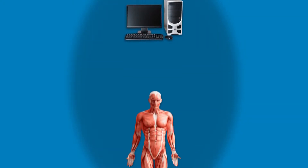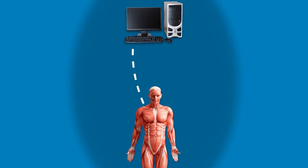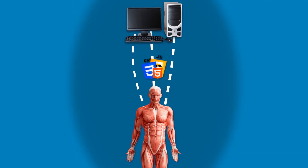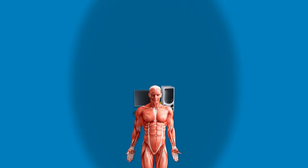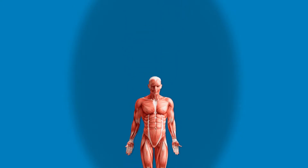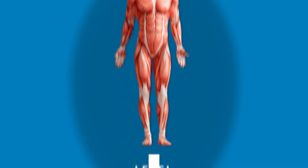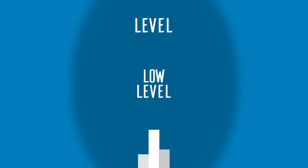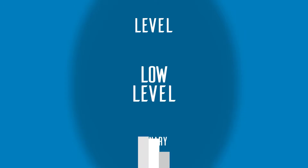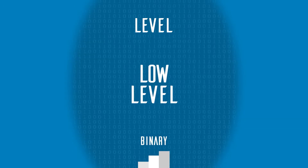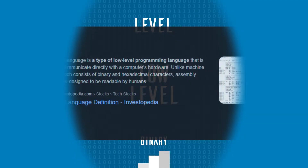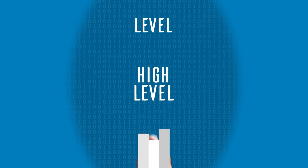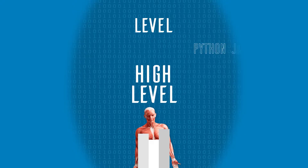The way humans found out how to communicate with computers was by creating programming languages that bring machine language closer to human language. We can classify programming languages by level, in which low-level languages are closer to binary code — ones and zeros — like assembly. And high-level languages are closer to human languages, like Python or JavaScript.